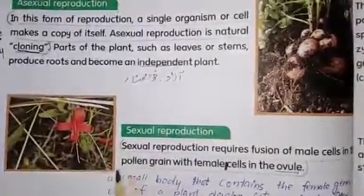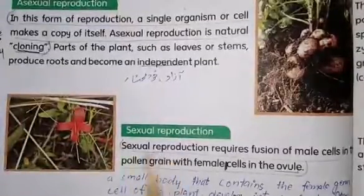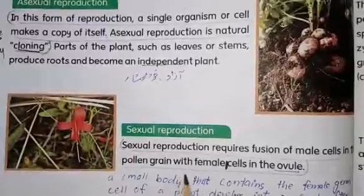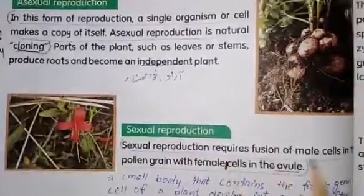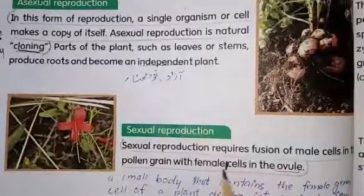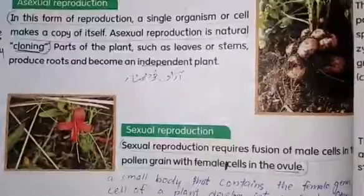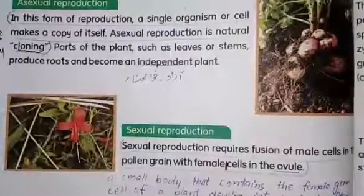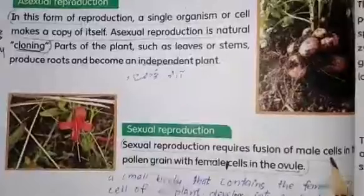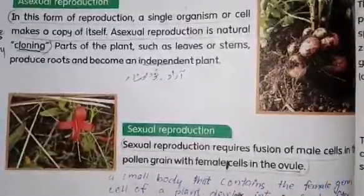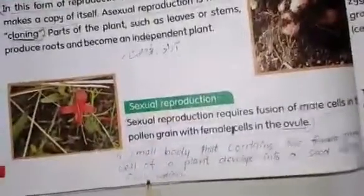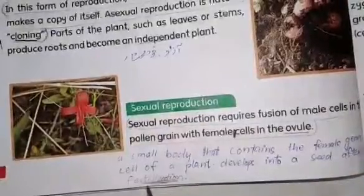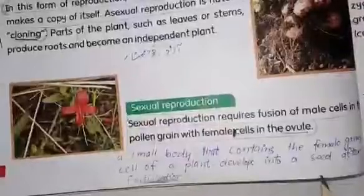The second type is sexual reproduction. Sexual reproduction involves two types of organisms: one is male and the other is female. It requires fusion of the male cell in the pollen grain with the female cell in the ovule — a small body that contains the female germ cell of a plant — which develops into a seed after fertilization.